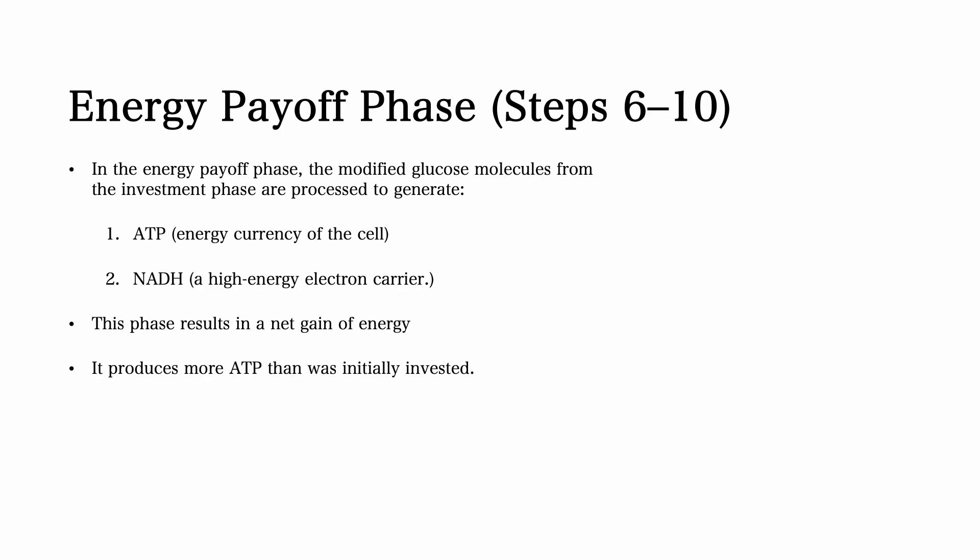Now we go on to the energy payoff phase. In the energy payoff phase, the broken down glucose molecules from the investment phase are processed to generate ATP and NADH. These are the high energy molecules that a cell needs. This phase results in a net gain of energy, producing more ATP than was used in the energy investment phase.